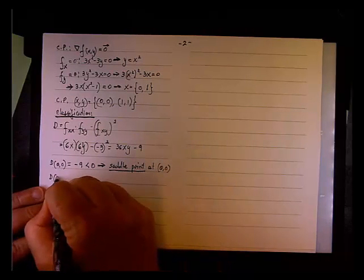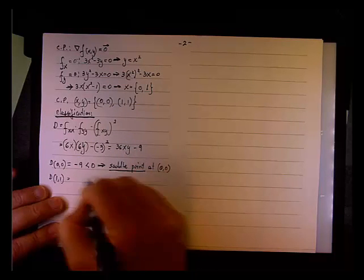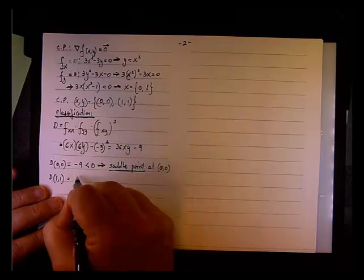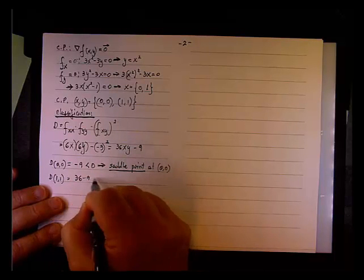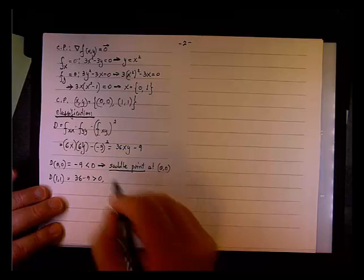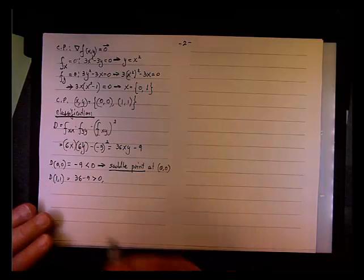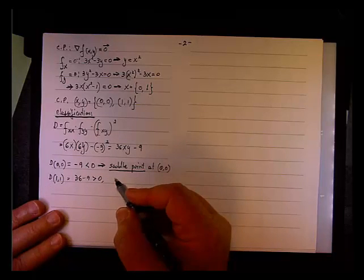And now let's check out (1,1). D at (1,1) equals 36 - 9, and we know it's positive. Okay? What about fₓₓ at (1,1)?